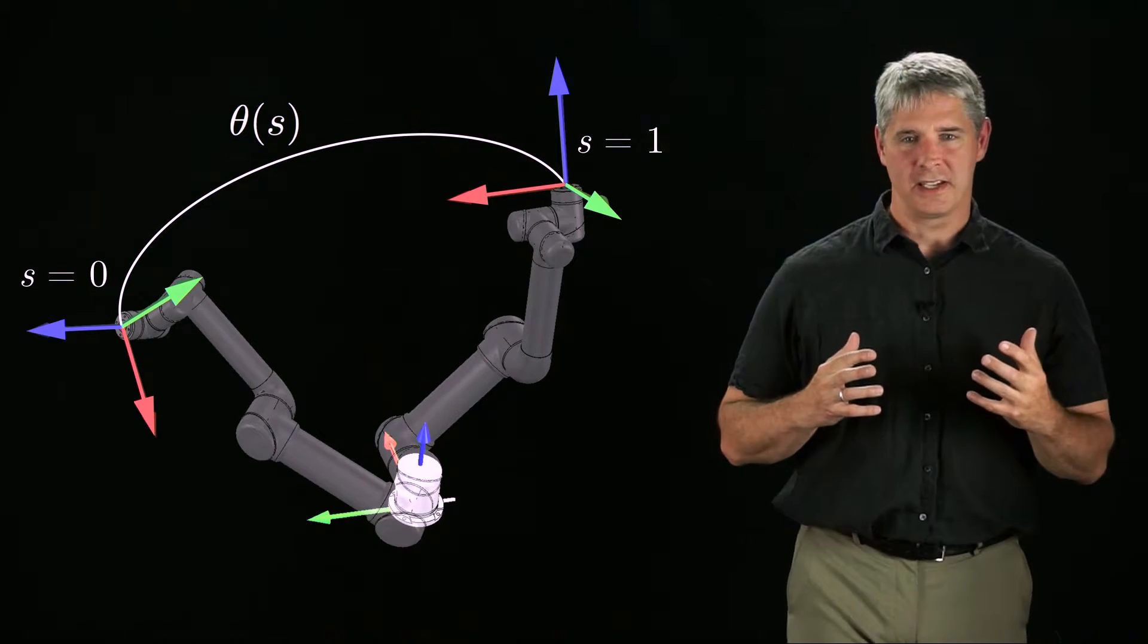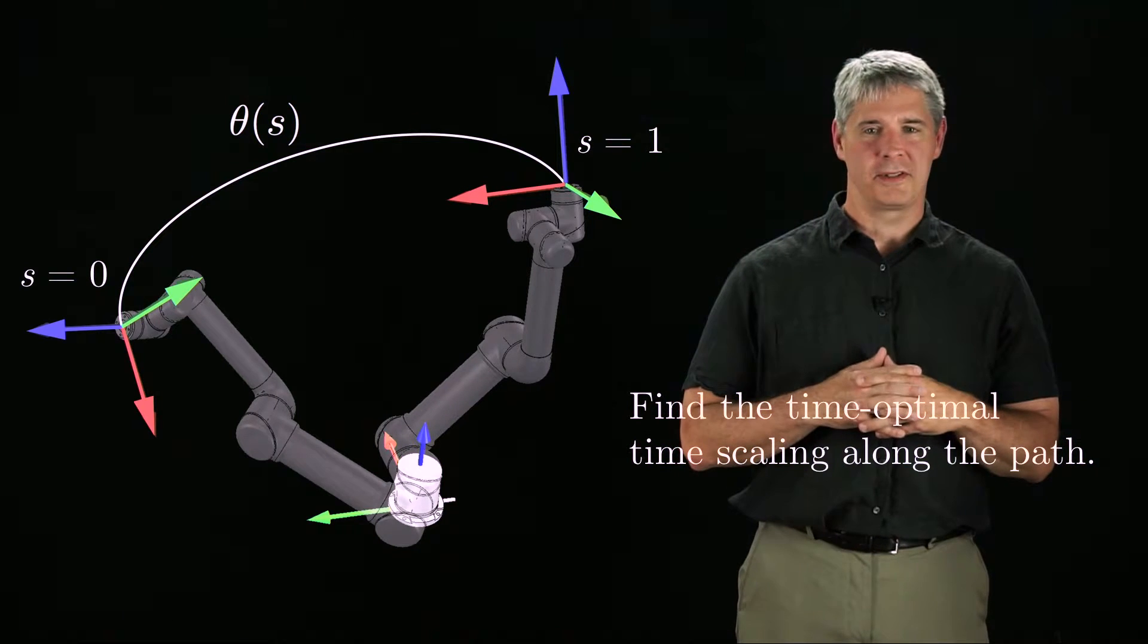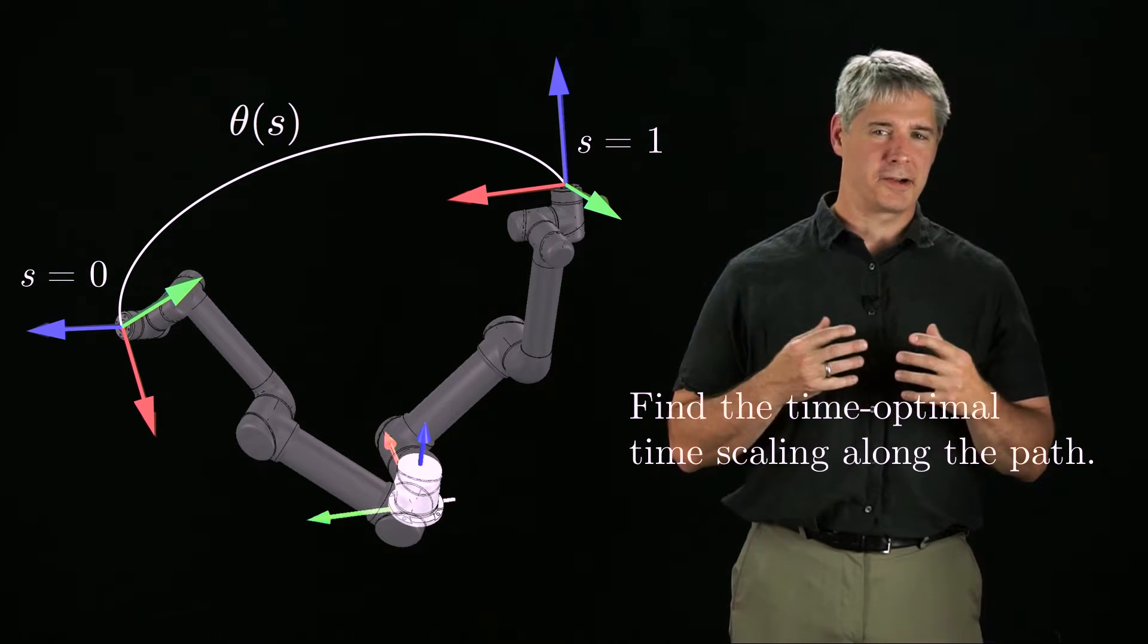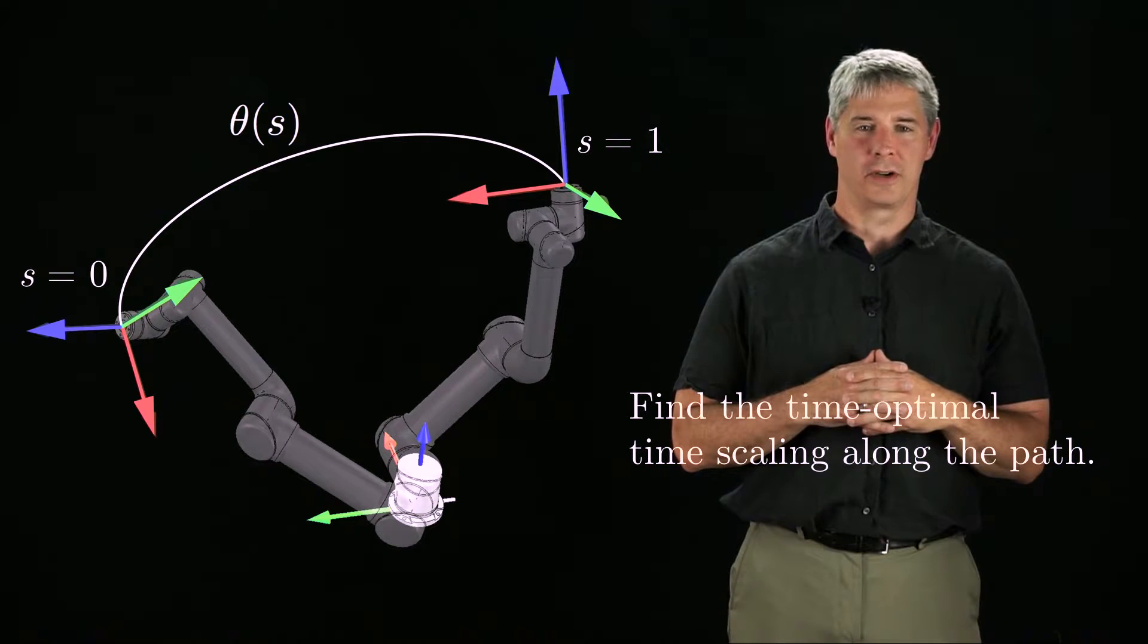In the next few videos, we consider the following problem. Given a desired path theta of s, find the time-optimal time-scaling along this path, considering the dynamics of the robot and torque limits at the robot joints.